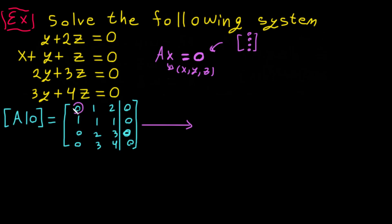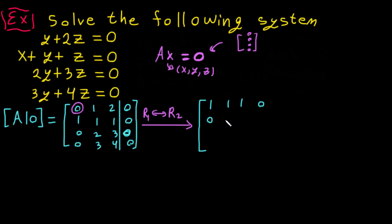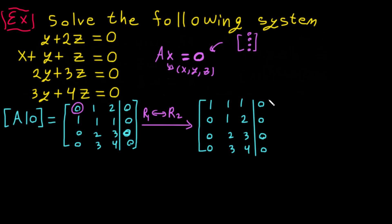We have to remember that the first entry must be a leading one. So we have to swap row one with row two. After the swap, row one becomes [1, 1, 1 | 0], row two becomes [0, 1, 2 | 0], row three is [0, 0, 2, 3 | 0] — wait, [0, 2, 3 | 0], and row four is [0, 3, 4 | 0].